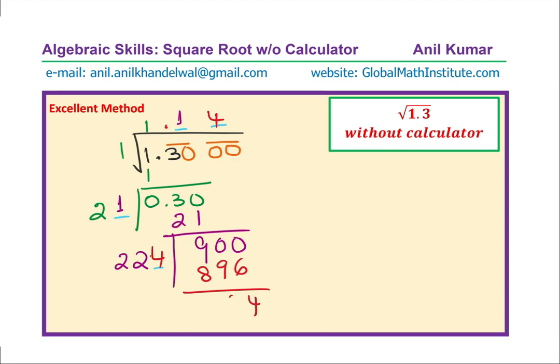That becomes the solution. Square root of 1.3 is equal to 1.14. Accurate to 2 decimal places, you get the idea. That is how we do this very special division.